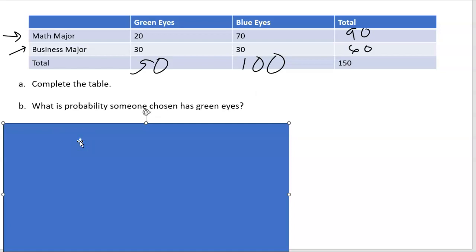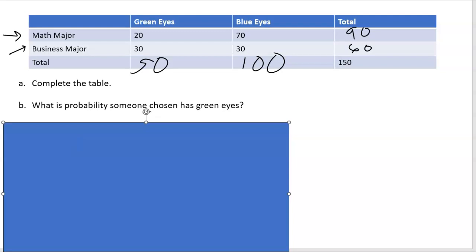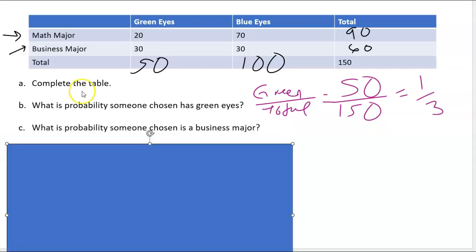We're looking at green eyes over the total. So I have 50 green eyed people and I have 150 total. Now that does reduce to one third if we get that far here.